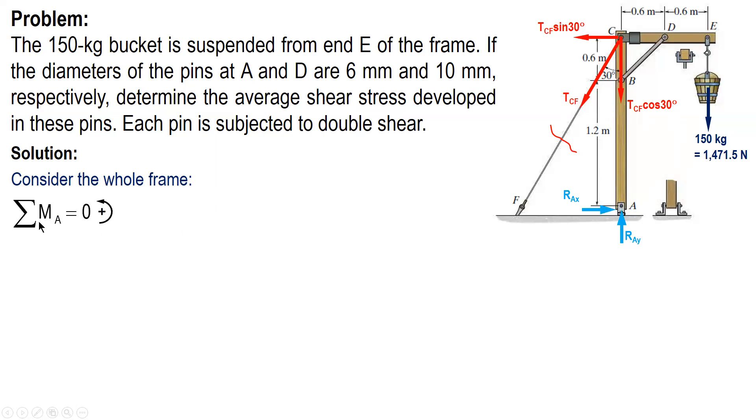So summation of moment about A equal to zero. Our sign convention is counterclockwise direction positive. This component has zero moment since the force will pass through point A, so we only have this one and the weight. TCF sine 30 times 1.8, that's 0.6 plus 1.2, while the moment arm or the perpendicular distance of the weight to A is 1.2. And solving for TCF, we have this one.